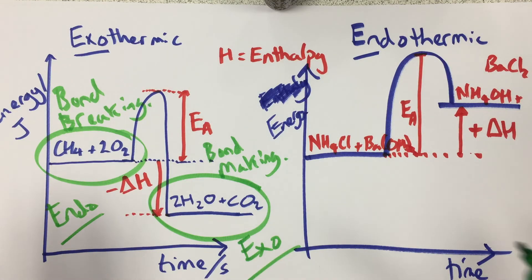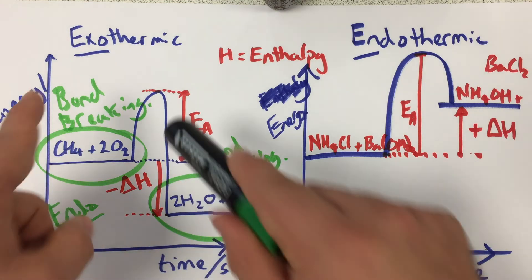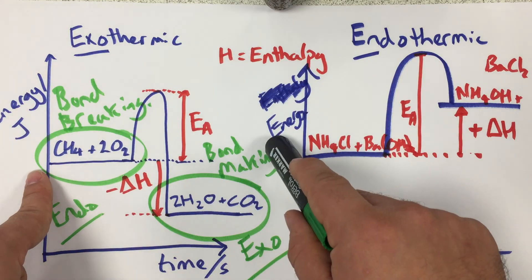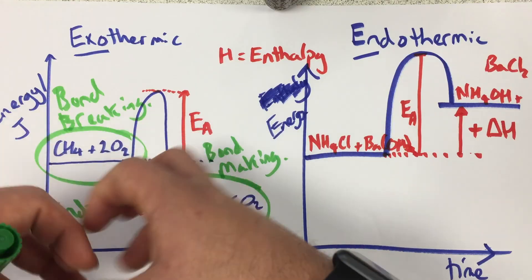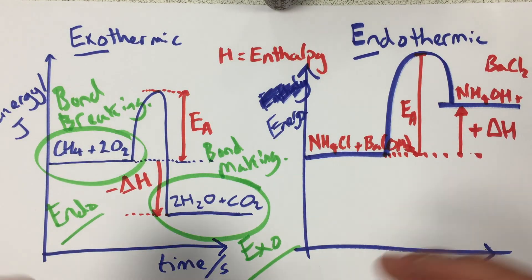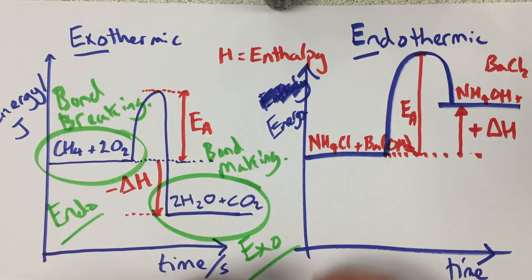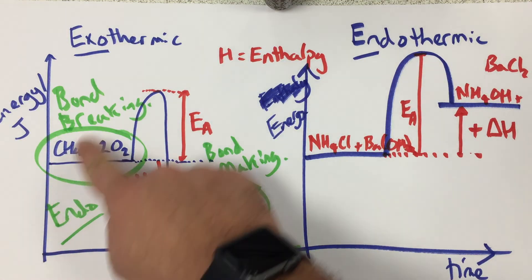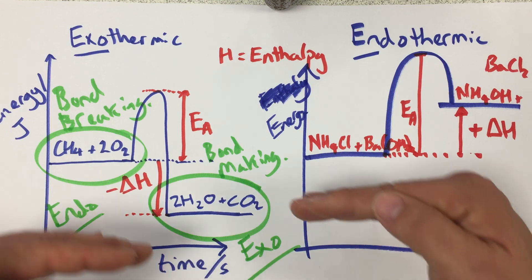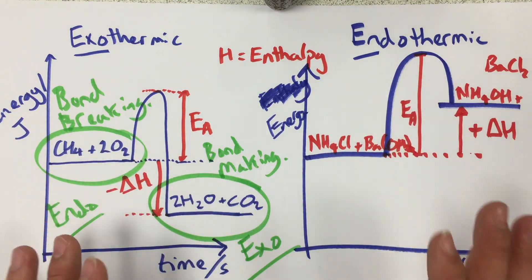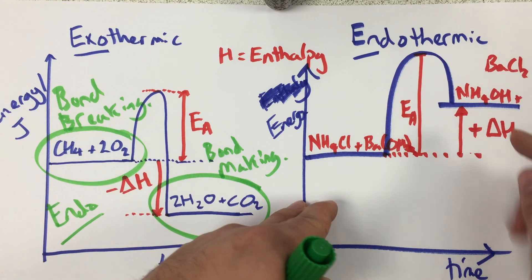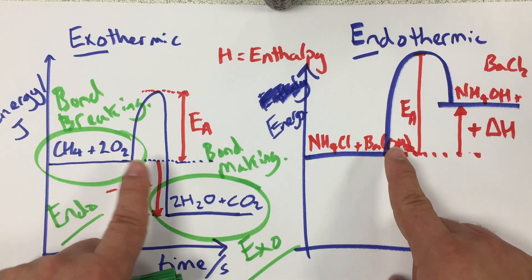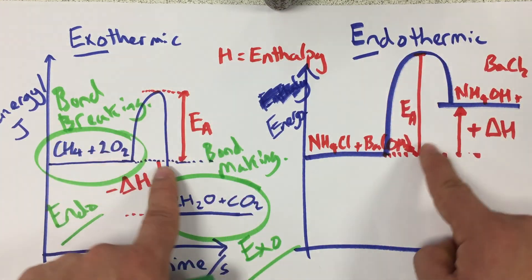In terms of what you're expected to know: in an exothermic reaction heat goes into the surroundings, so they get warmer; in an endothermic reaction heat comes from the surroundings into the chemicals, so it gets colder. You should know that exothermic is associated with bond making and endothermic with bond breaking. You should know the shape of these two graphs — for exothermic the enthalpy change is negative so the products line is lower, and for endothermic the enthalpy change is positive so the products line is higher. And you should know that all chemical reactions require an energy of activation in order to start.